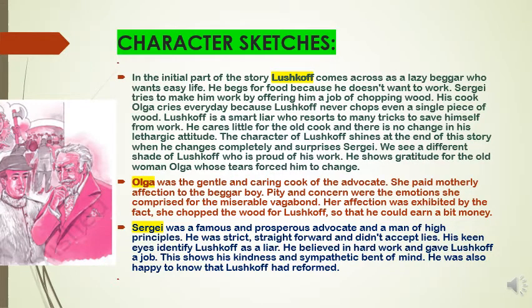This story has basically three important characters. The first one is Lushkov, who is the vagabond — the lazy beggar. The next is Olga, the cook of Sergei, and the other character is Sergei himself, the prosperous advocate. Now let us take a glimpse of each character individually.